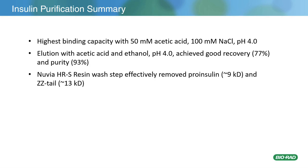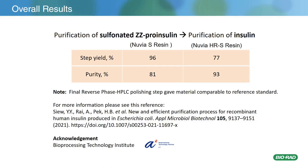These are the overall results. For the ZZ proinsulin purification on Nuvia-S, the step yield was 96% and purity was 81%. For the purification of insulin with Nuvia HRS, the step yield was 77% and purity was 93%. A final polishing reverse-phase HPLC step was done to get material comparable to a reference standard. For more details, please check out the publication by our collaborators at Bioprocessing Technology Institute, who we thank very much for their work.